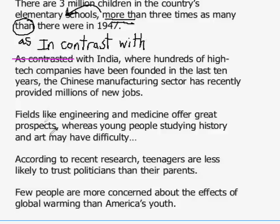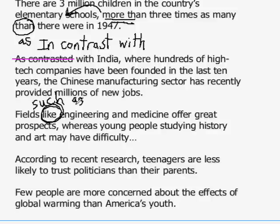One more note: never use 'like,' which means 'similar to,' to give examples in formal written English, and certainly not in the GMAT. It's much better to say 'fields such as engineering and medicine offer great prospects.' Also watch the comparison itself — if you write 'whereas young people studying history and art,' you're comparing fields with young people. Better to say 'whereas history and art' after the comma.